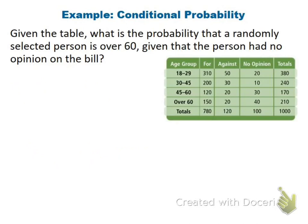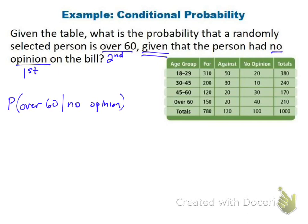Now we move on to conditional probability — when the order of events matters. We want the probability that a randomly selected person is over 60, given that the person had no opinion on the bill. The word 'given' tells us that 'no opinion' matters first. Looking at the table, I circle the 'no opinion' column, then find the people who had no opinion and are over 60, which is 40. So it's 40 over 100, reducing to two-fifths, or 40%.